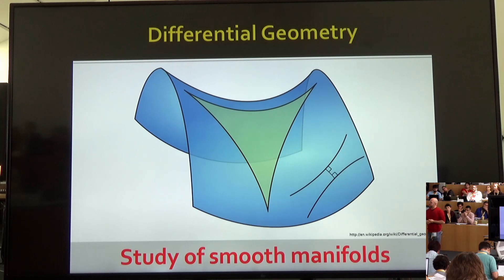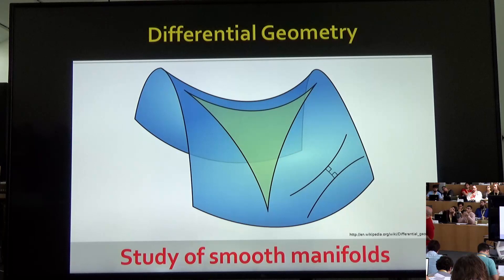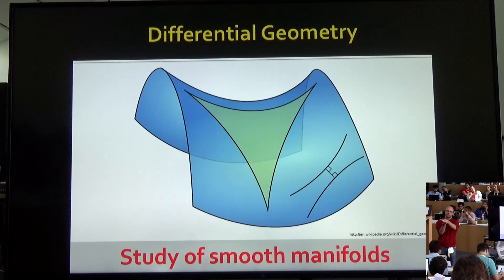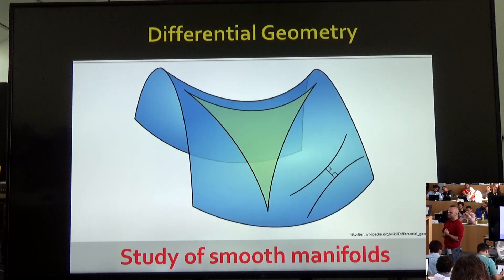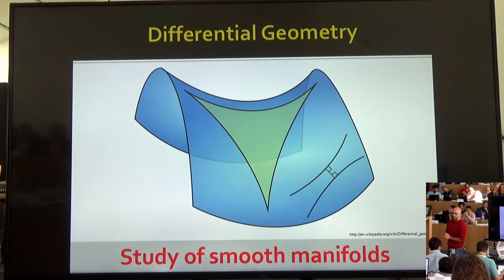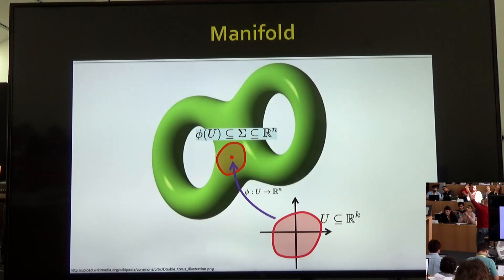If we think about geometry, you start with curves, then surfaces. A surface has an interesting structure: if I take a magnifying glass and get very close to it, it's sort of a two-dimensional object sitting in 3D. That's the basic idea of a manifold: an object that locally has some Euclidean structure — some k-dimensional structure — but maybe when you step further out it's embedded in some high-dimensional space.